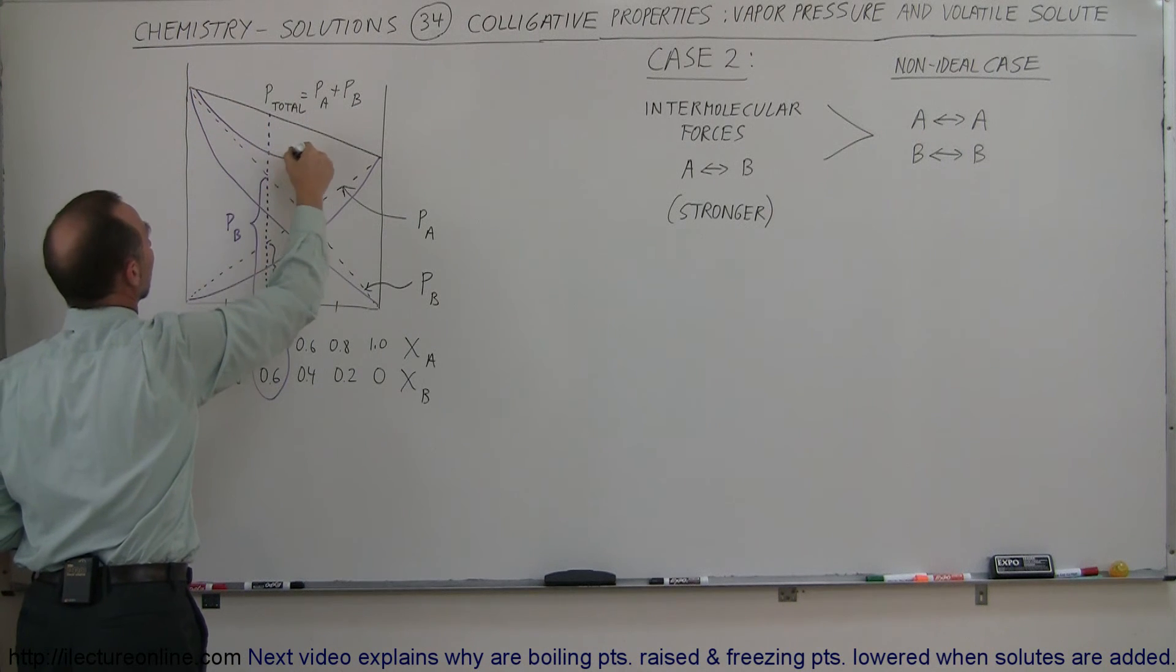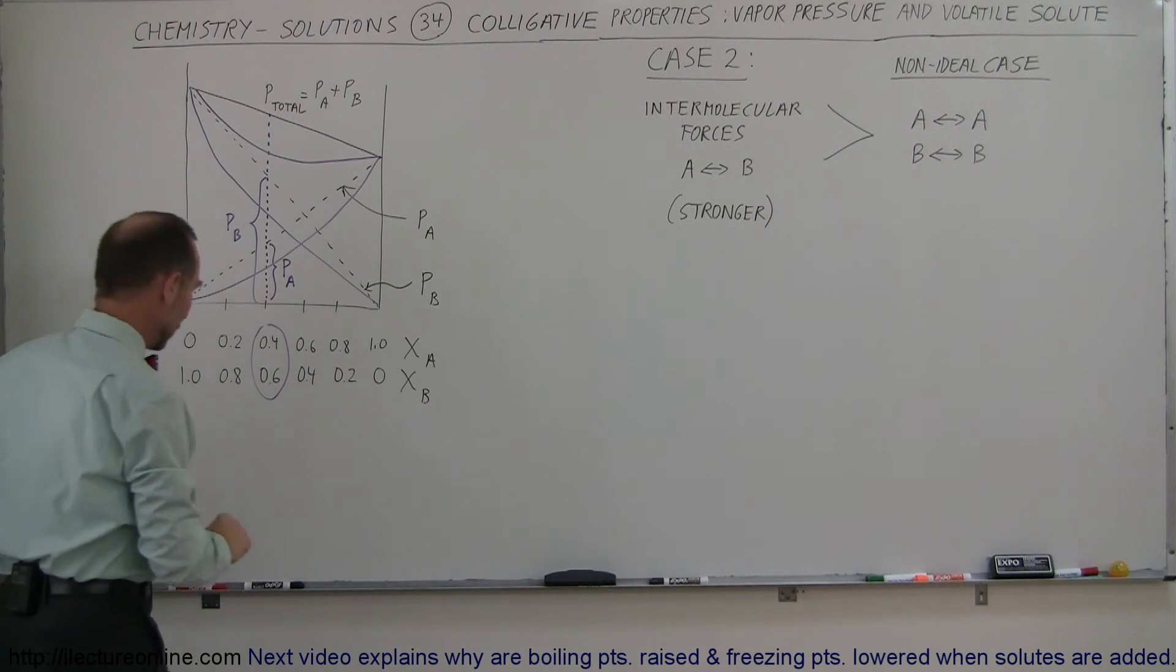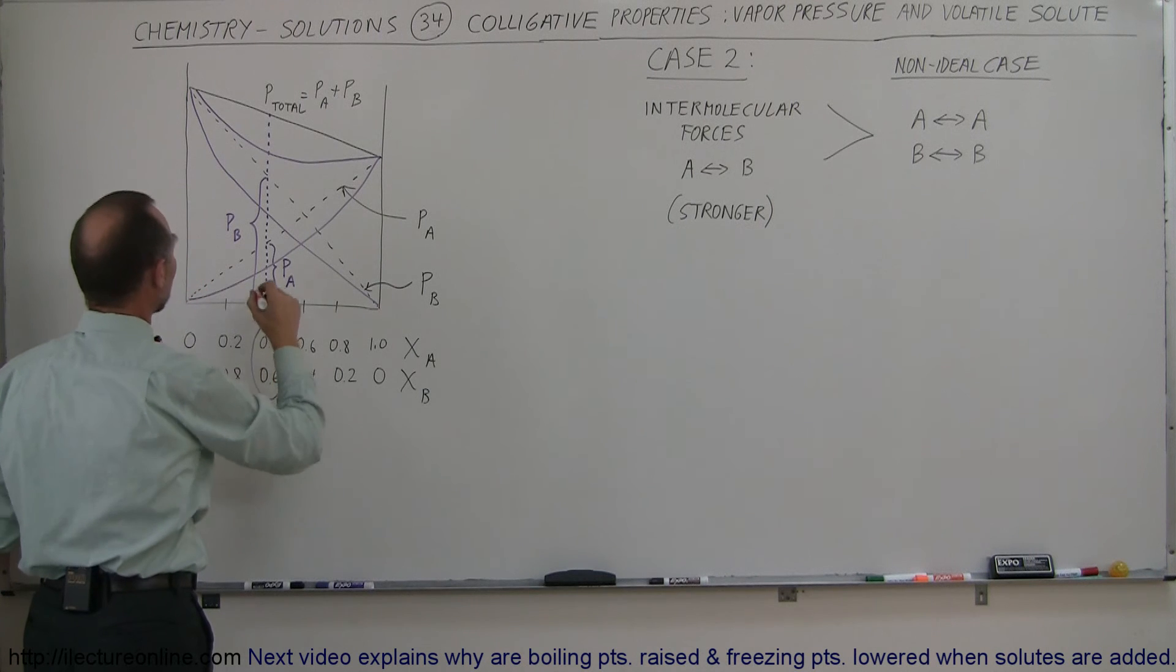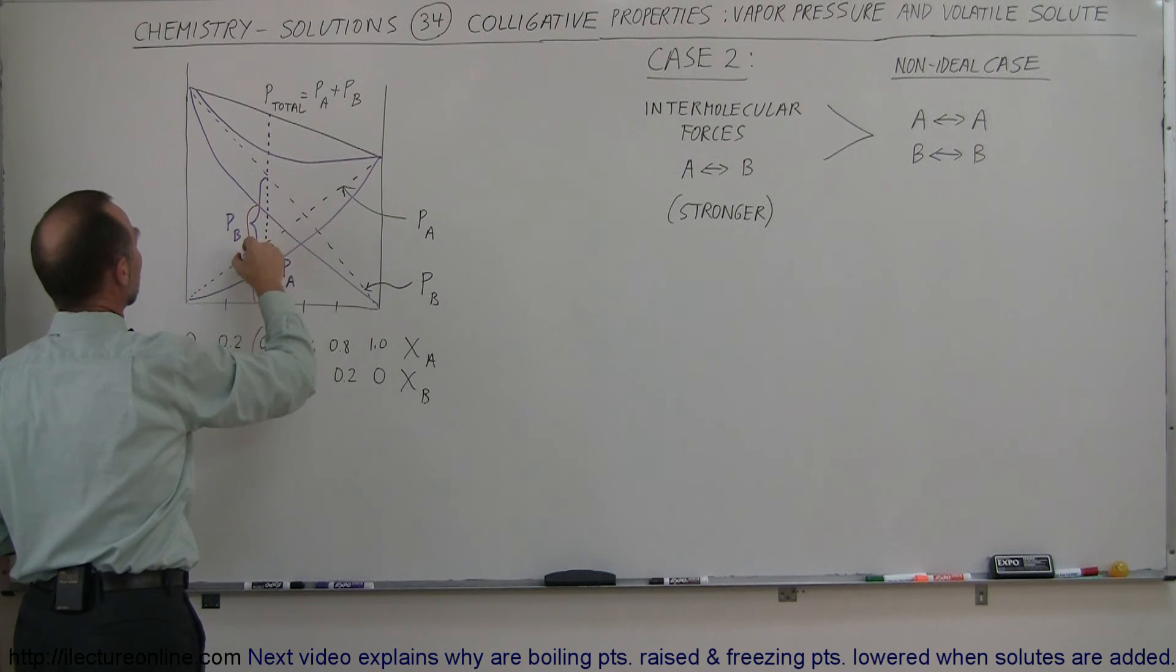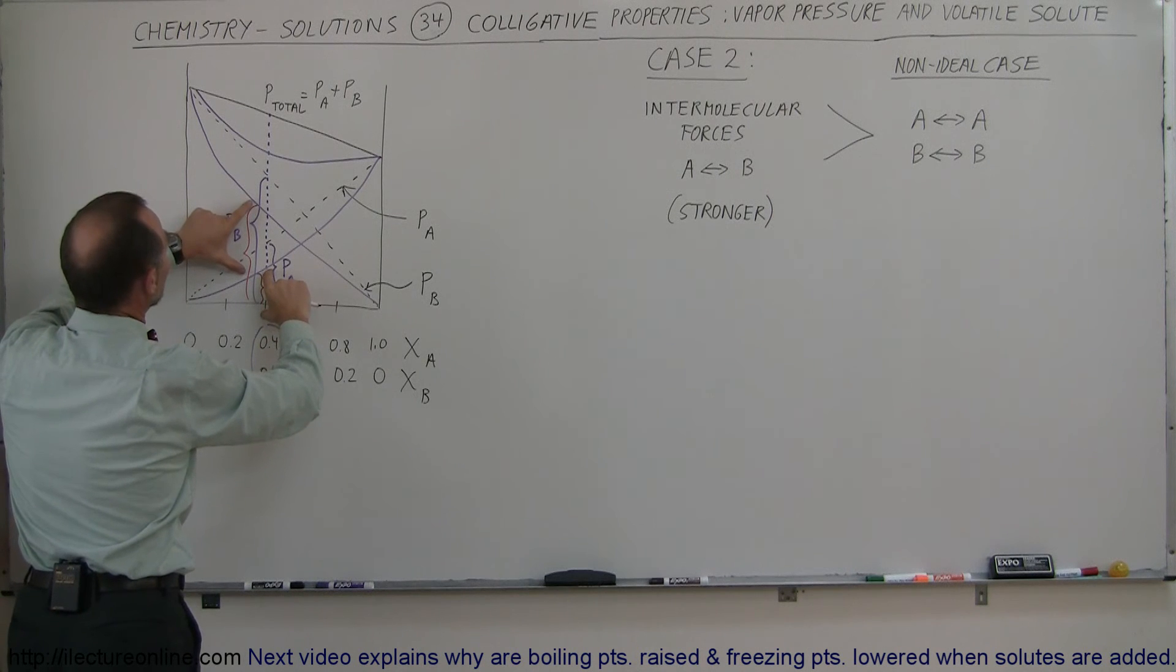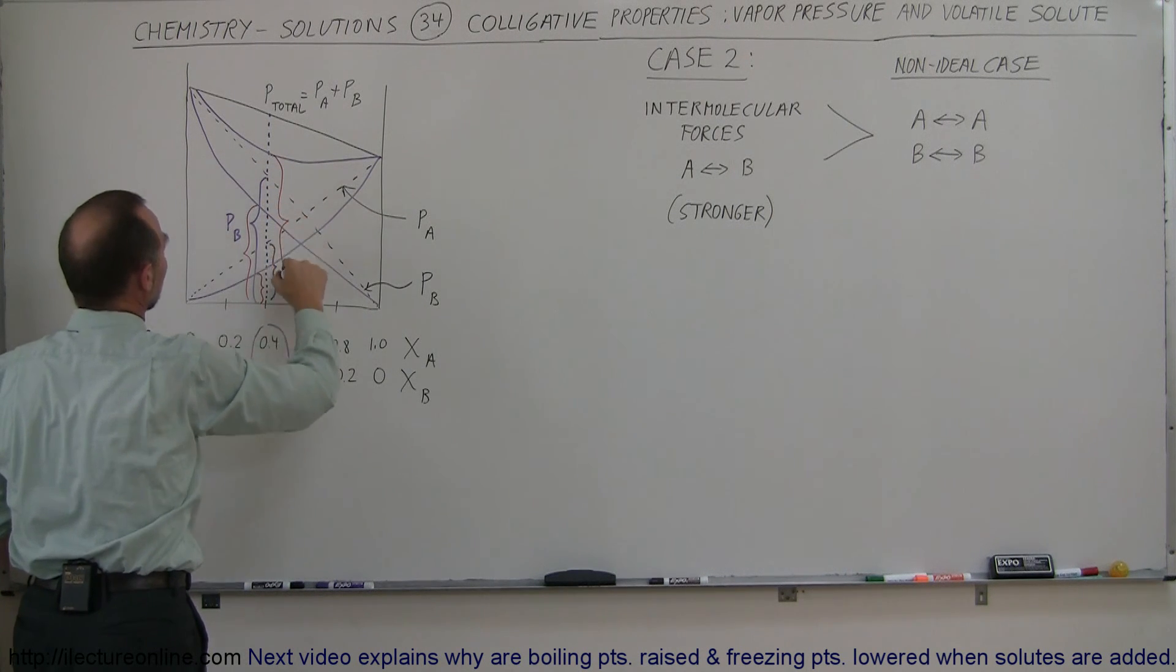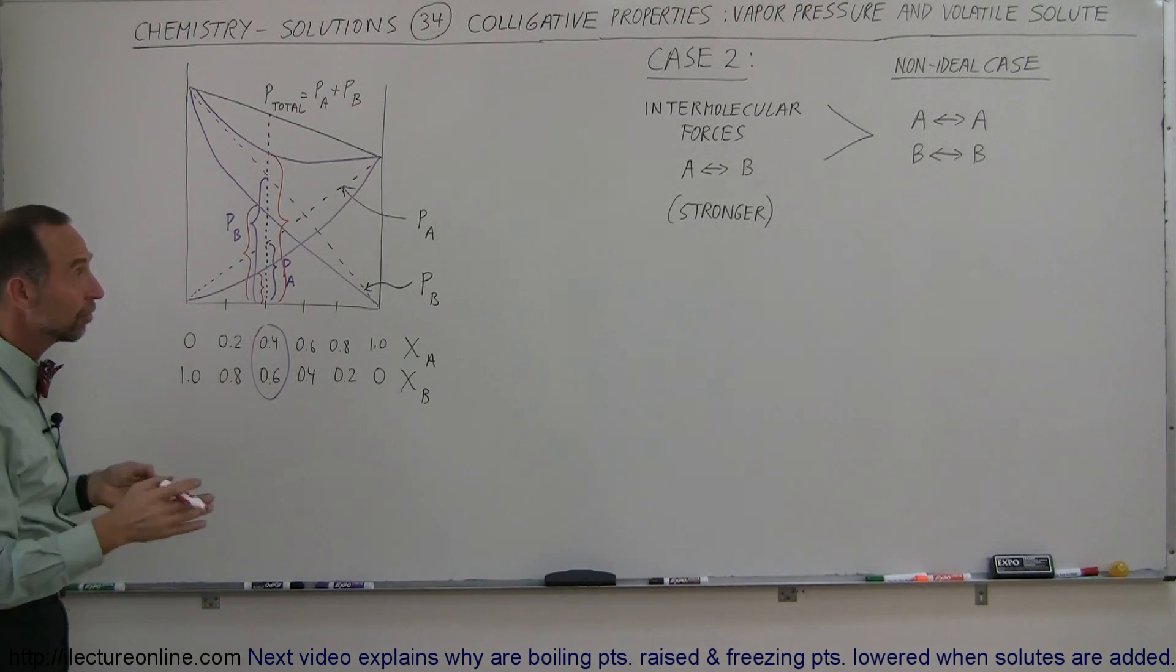So when you put the two together, you end up with a total vapor pressure that looks a lot more like this rather than the ideal case. And so in reality then what you end up with is the pressure of A would only be this strong, the pressure of B would only be this strong, and then the sum of the two will give you the total pressure, which is this pressure right here for that case, rather than the total pressure like that. So you can see that there's deviations from what we call the ideal case.